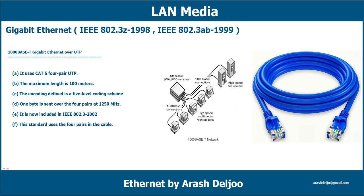1000Base-T is a type of standard for implementing gigabit ethernet networks. The T identifies it as an extension of the traditional 10Base-T and 100Base-T ethernet technologies for transmission over copper unshielded twisted pair, or UTP, cabling. Gigabit ethernet standards are defined in the 802.3Z and 802.3AB standards. 1000Base-T technologies are in the beginning stage of being widely implemented in enterprise-level networks, primarily for short high-speed interconnects in wiring closets and for connecting high-speed workstations.